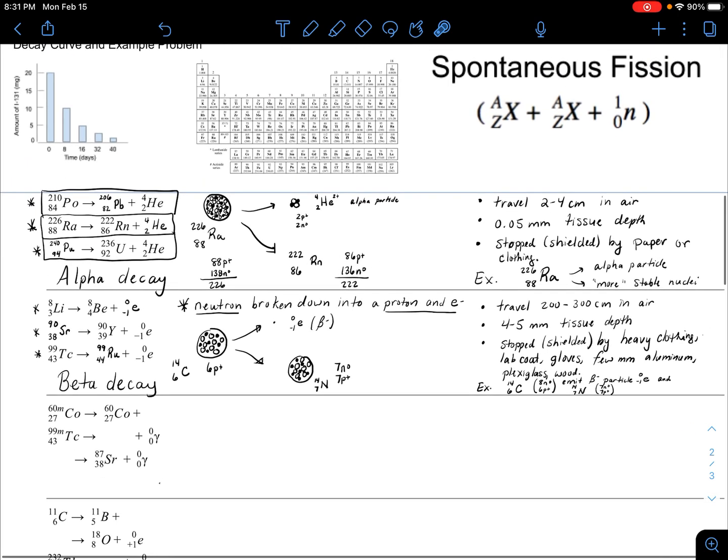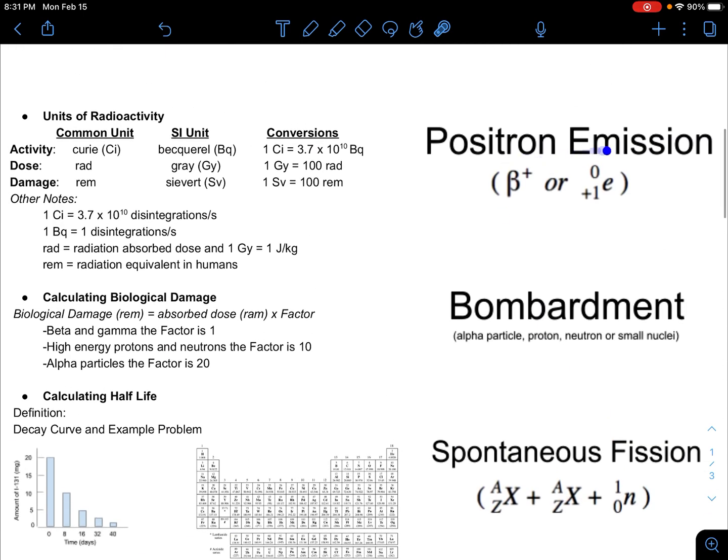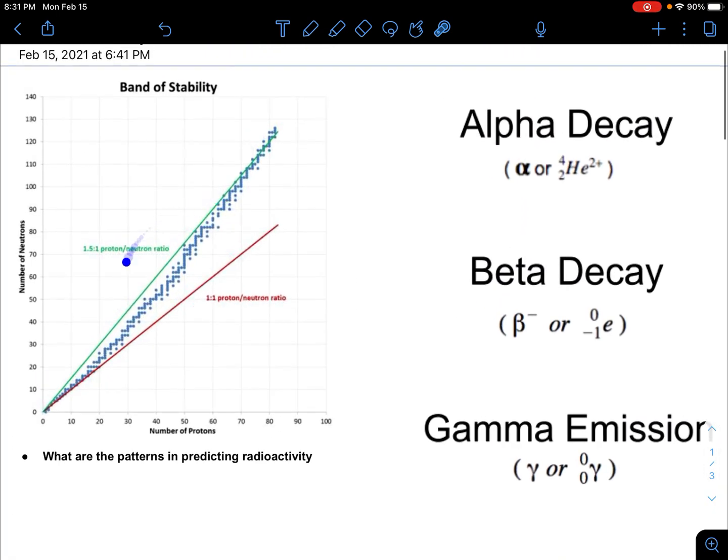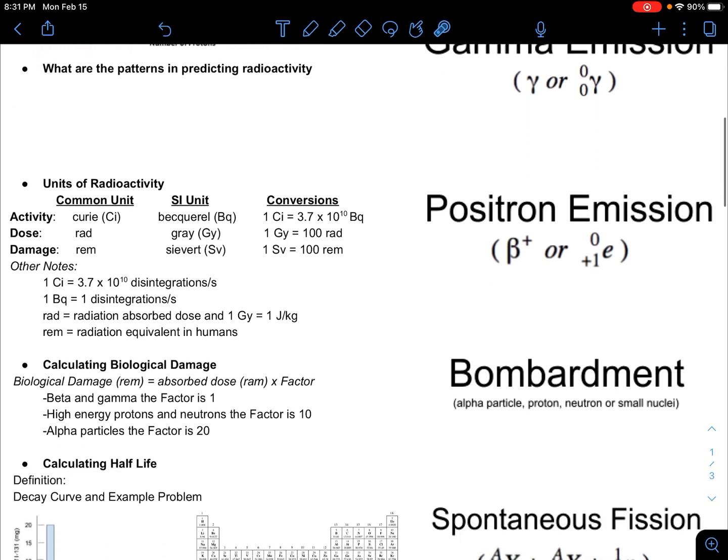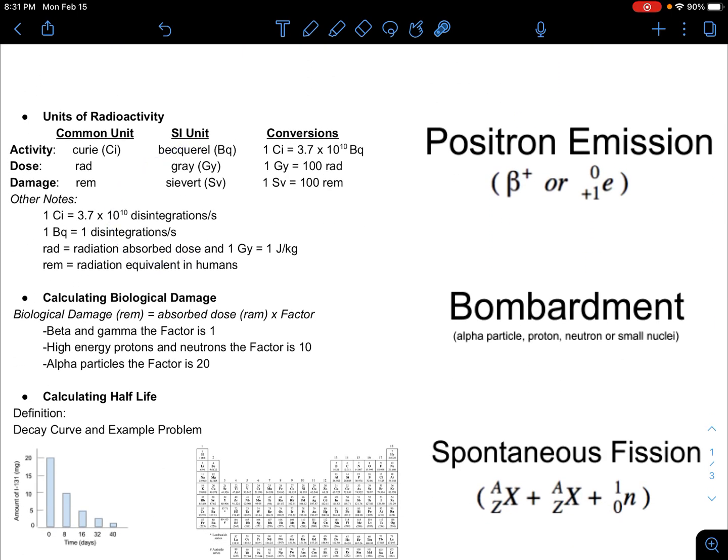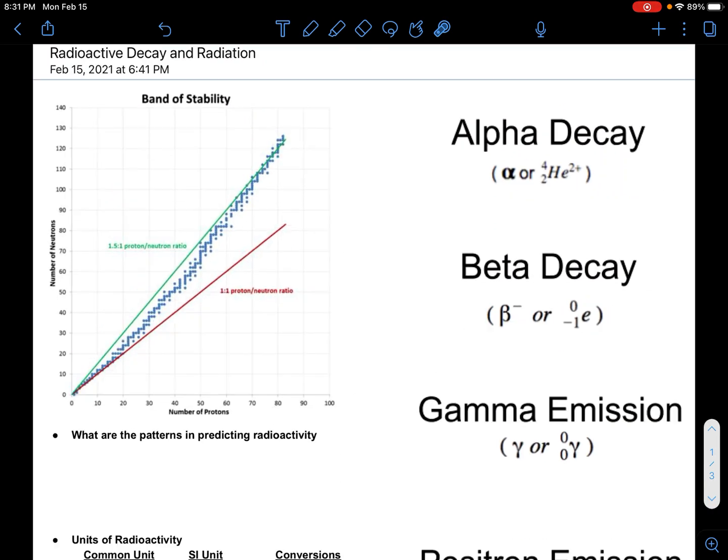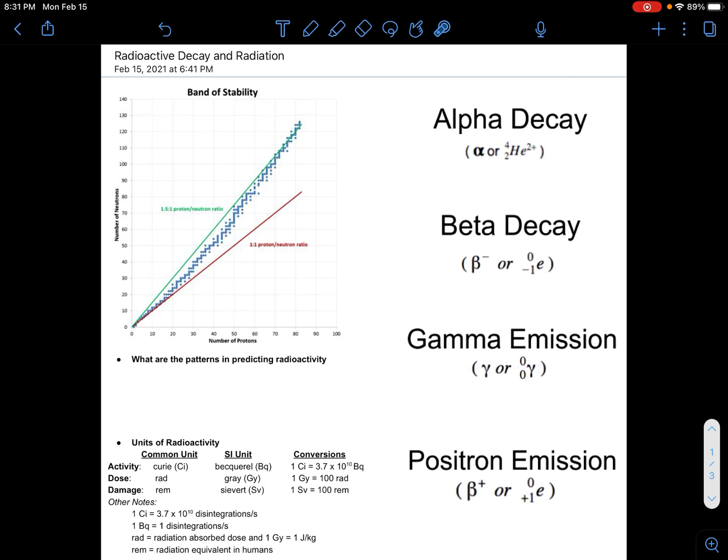That's beta decay, the second type. It's the second most popular type of radioactive decay after alpha. Gamma will be next in a separate video. I hope to make another video on positron emission, bombardment, spontaneous fission, and this band of stability. I'll also cover units of radioactivity, how to calculate damage, and half-life calculations. Good luck, chemist, and hopefully you can calculate your beta decay problems without any issues.